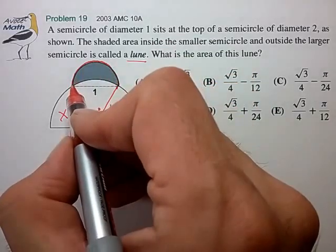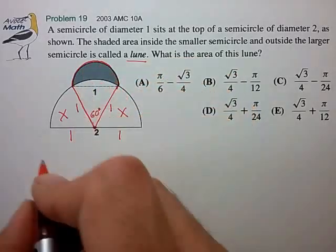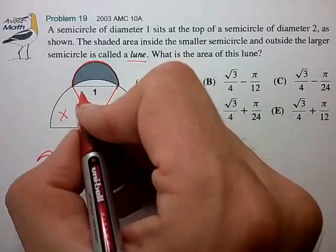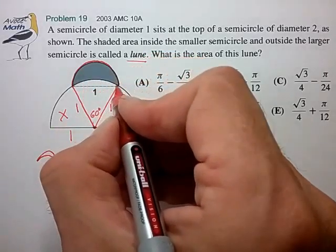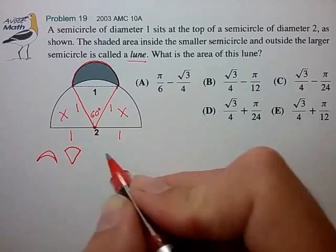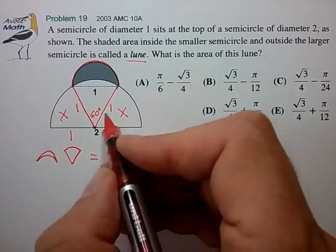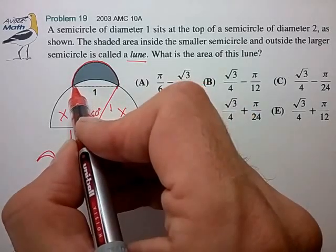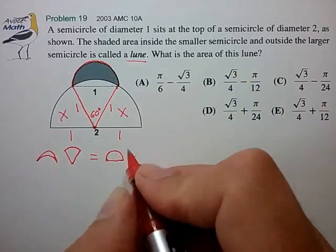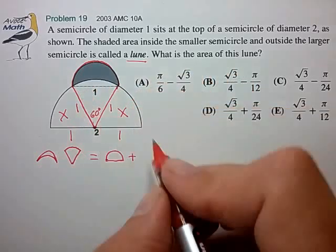So if we look at this area of our ice cream cone, we notice that we can compute this area two different ways. In one way we can look at the area of the lune plus the area of this circle segment, or sector. And the other way to calculate this area is to see it as the area of this semicircle plus the area of this equilateral triangle.